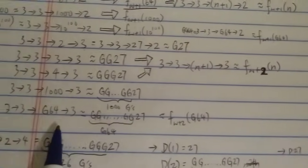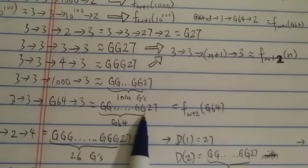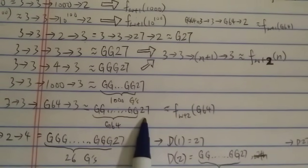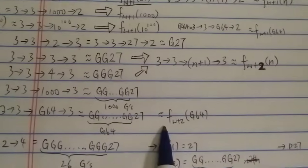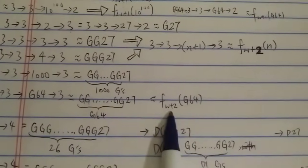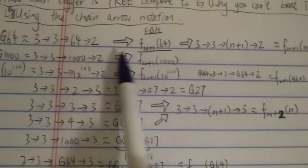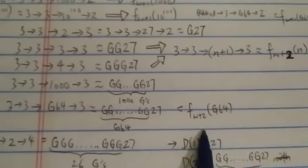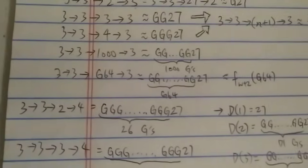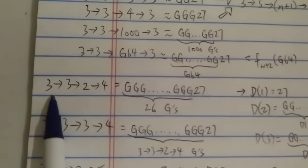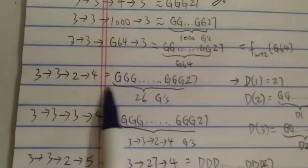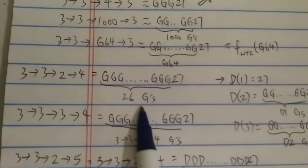One thing brought up by many many people is trying to beat Tree(3) by using G of G of G of G with G64 G's of 64. That is only around f(ω+2, G64), which is around ω+2. That's not a big improvement compared to G64, which is around ω+1. By doing something this crazy you're only getting ω+2. So let's continue — let's try 3→3→2→4. We are increasing the fourth term by 1 again, which gives around G of G of G of G with 26 G's applied to 27.